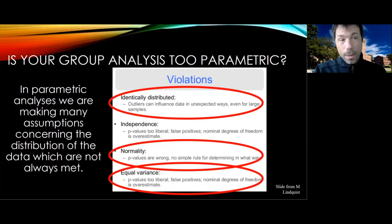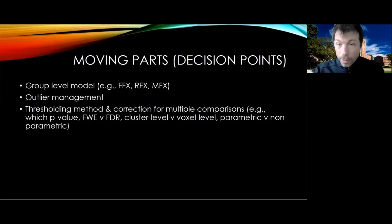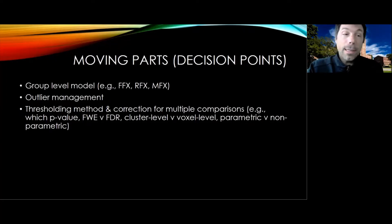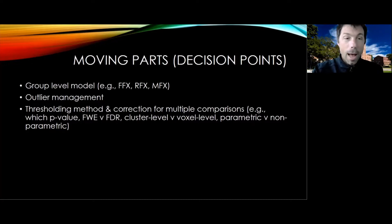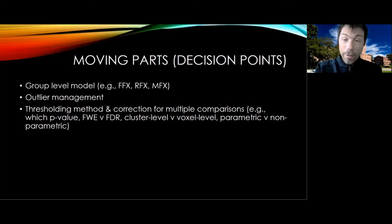When you're doing a group analysis, there's a number of moving parts and they all interact. These are all decision points that you have to make. For example, what group level models should you use? Fixed effects, random effects, mixed effects — they all have different consequences in terms of violating these assumptions.